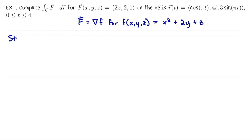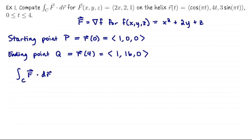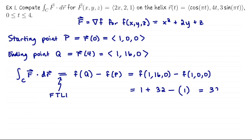To compute this vector line integral, I can just evaluate the potential function at the beginning and end of the helix. We started at r(0) = (cos 0, 0, 0) = (1, 0, 0), and ended at r(4) = (cos 4π, 16, 0) = (1, 16, 0). So the vector line integral equals f(1, 16, 0) minus f(1, 0, 0), which is (1 + 32 + 0) minus (1 + 0 + 0) = 33 - 1 = 32.